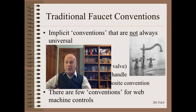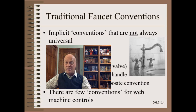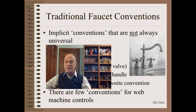What makes the traditional faucet even remotely usable is that it employs conventions — implicit rules of operation that are mostly standard for faucets that look similar to this one. To understand controls, even for a simple faucet, one needs to spell out which conventions you can count on. Where conventions are not present, as in most web machine controls, we need to make each individual control obvious in what it does and how to operate it. Then we must arrange all the separate controls in an obvious or at least reasonable order.